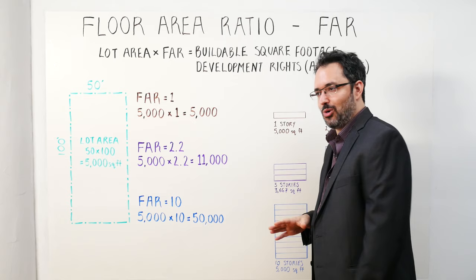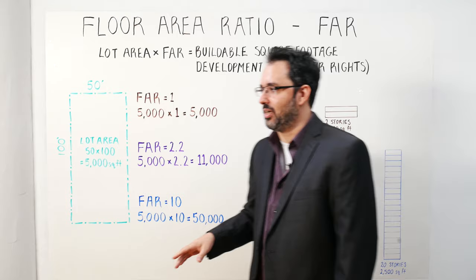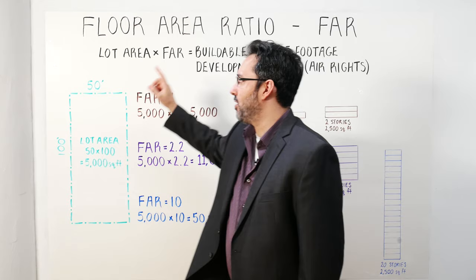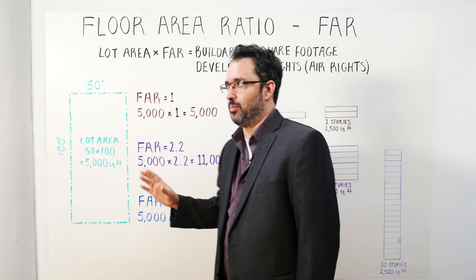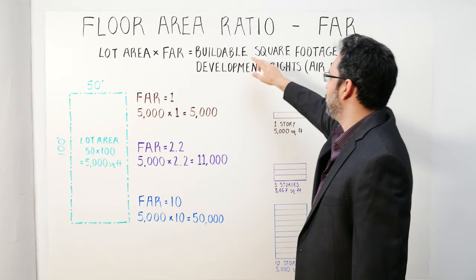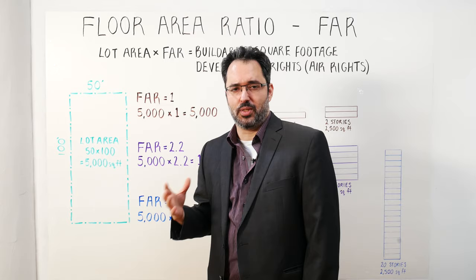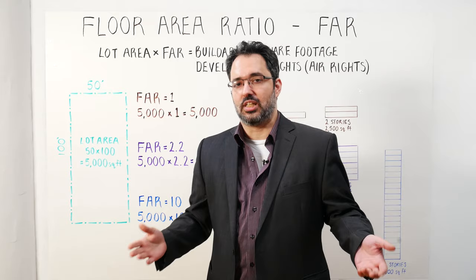Everybody at city planning, at the Department of Buildings, architects — they all say FAR. So what is floor area ratio? It's a proportion that determines how many square feet a building can be. You take the lot area multiplied by the FAR and that equals your buildable square footage. The buildable square footage is also referred to as your development rights — your legal right to develop a property and the magnitude to which you can develop.